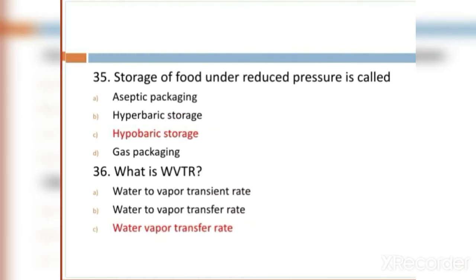MCQ 35: Storage of food under reduced pressure is termed: Option A: aseptic packaging. Option B: hyperbaric storage. Option C: hypobaric storage. Option D: gas packaging. Option C, hypobaric storage, is the right answer.